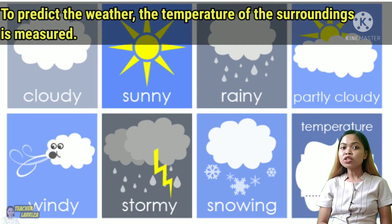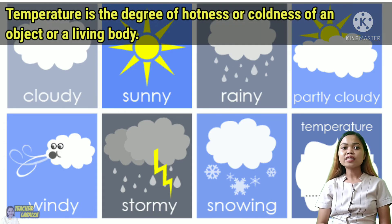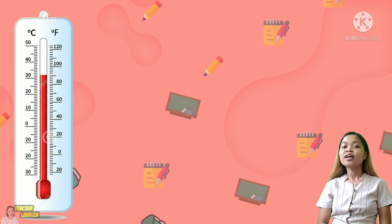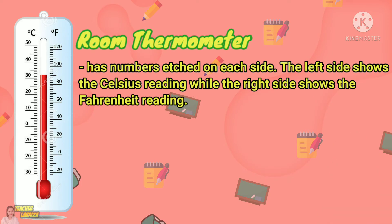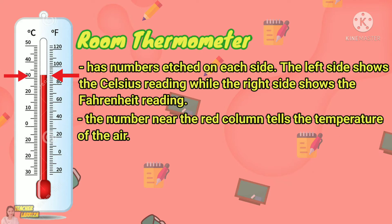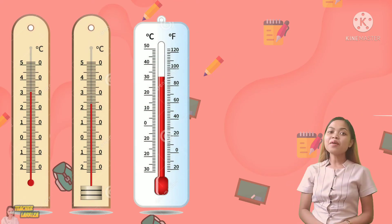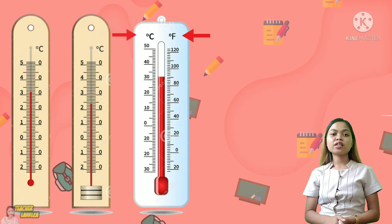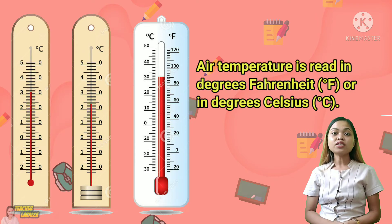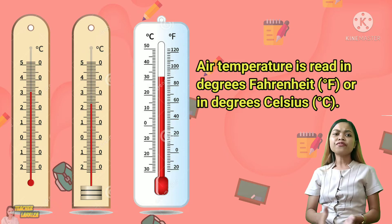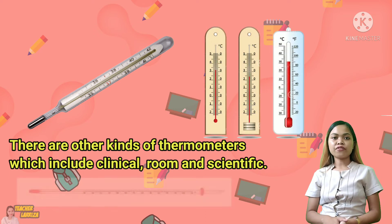To predict the weather, the temperature of the surroundings is measured. Sa ating mga nakaraang aralin ay ating natutunan na ang temperatura ay ang antas ng init at lamig ng isang bagay o ng isang nilalang na may buhay. The instrument used to measure temperature is called thermometer. A room thermometer has numbers etched on each side. The left side shows the Celsius reading while the right side shows the Fahrenheit reading. Look at the red column of the thermometer — the number near the end of the red column tells the temperature of the air. Ang air temperature ay binabasa in degrees Fahrenheit or in degrees Celsius. The Fahrenheit scale is now seldom used. There are other kinds of thermometers which include clinical, room, or scientific.